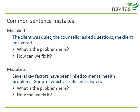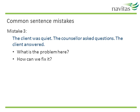To fix a run-on sentence, you could say: 'The client was quiet, so the counsellor asked questions, and the client then answered.' To fix a sentence fragment, you could join the sentences with a comma: 'Several key factors have been linked to mental health problems, some of which are lifestyle related.' Or you could add a linking word: 'Several key factors have been linked to mental health problems, and some are lifestyle related.' Now take a look at this next example. There's no grammatical problem, but the short separate sentences make the writing choppy with no links between ideas. This could be fixed by joining them with linking words: 'The client was quiet, so the counsellor asked questions, and the client answered.'